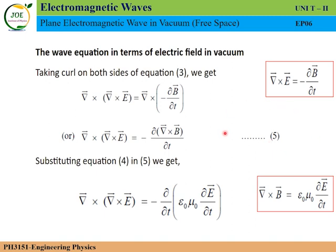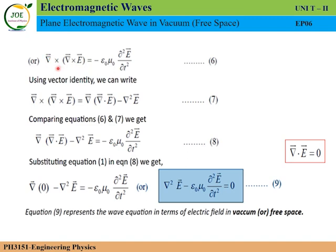The fourth Maxwell equation for free space gives del cross B equal to epsilon-zero mu-zero dou E by dou t. Substituting this into the fifth equation: del cross del cross E equals minus dou by dou t of epsilon-zero mu-zero dou E by dou t, which gives del cross del cross E equals minus epsilon-zero mu-zero dou-squared E by dou t-squared. This is equation number 6.